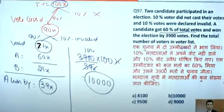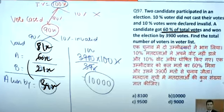10% invalid means 9x are invalid, leaving 81x valid votes. With 60% of total valid votes going to the winning candidate — the candidate got 60% of 81x — so the winner got approximately 60x and the loser got 21x, giving a margin of 39x.